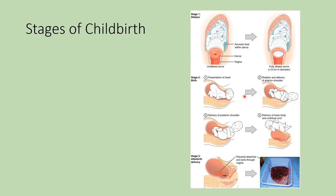In the second stage — the expulsion stage — the baby is born head first. Usually once the head is out, the baby kind of turns and the rest slides out. The third stage is the afterbirth delivery: the placenta detaches from the uterine wall and is delivered. They will check to make sure no pieces remain attached, as retained placental tissue can cause very severe complications.